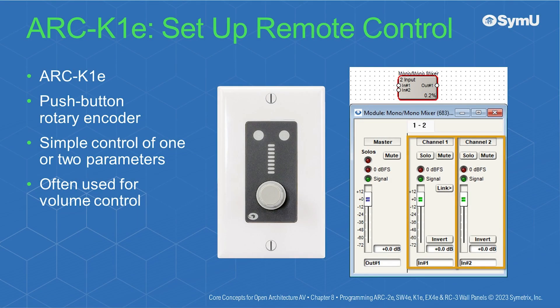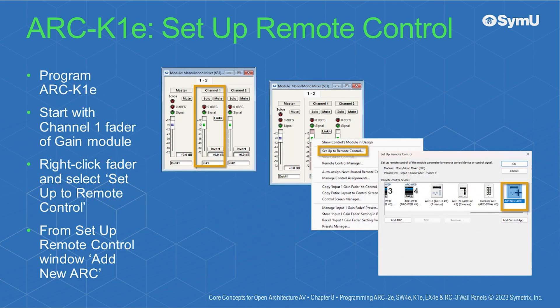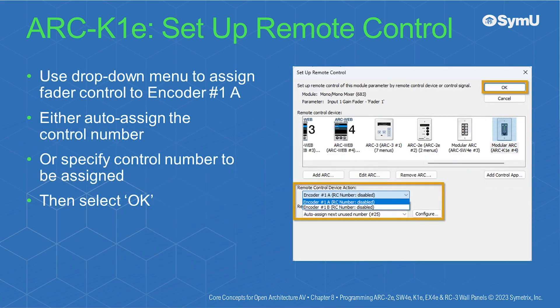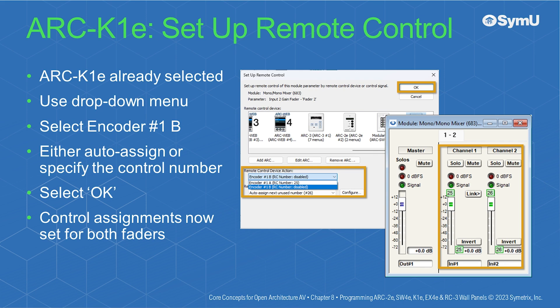The Arc K1E features a push-button rotary encoder providing simple control of one or two parameters in the Symmetrix DSP hardware, typically used for volume control. To program the Arc K1E, right-click the Channel 1 fader of a gain module and select Setup to Remote Control, then choose Add New Arc. From the drop-down menu, choose Arc K1E. Use the drop-down menu to assign the fader control to Encoder 1A, then either auto-assign or specify the control number for the Channel 1 gain fader and select OK. Return to the gain module, right-click the Channel 2 fader, select Setup to Remote Control, select Encoder 1B, assign the control number, and select OK. Control assignments have now been set for both faders.